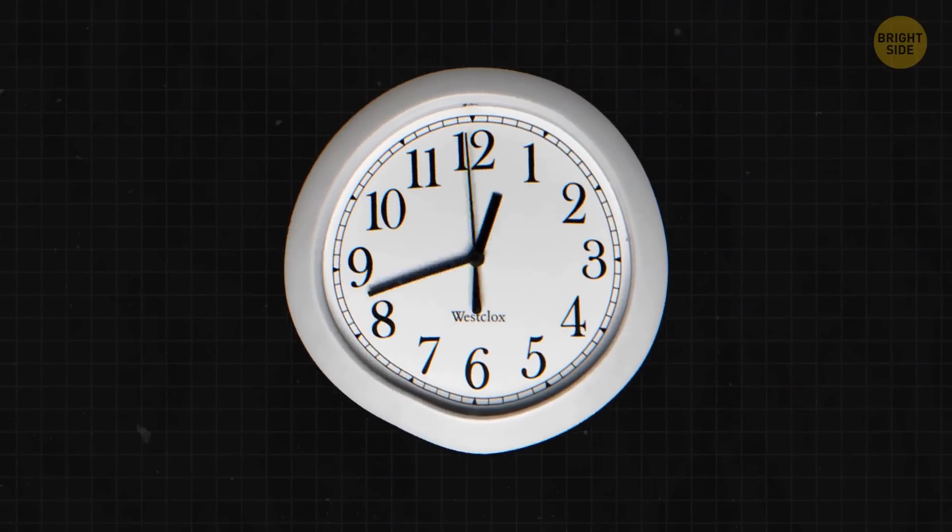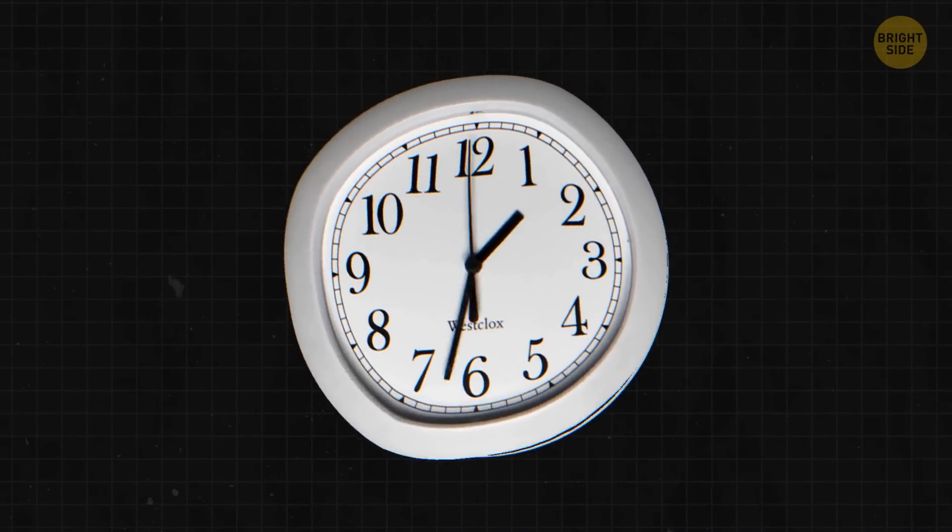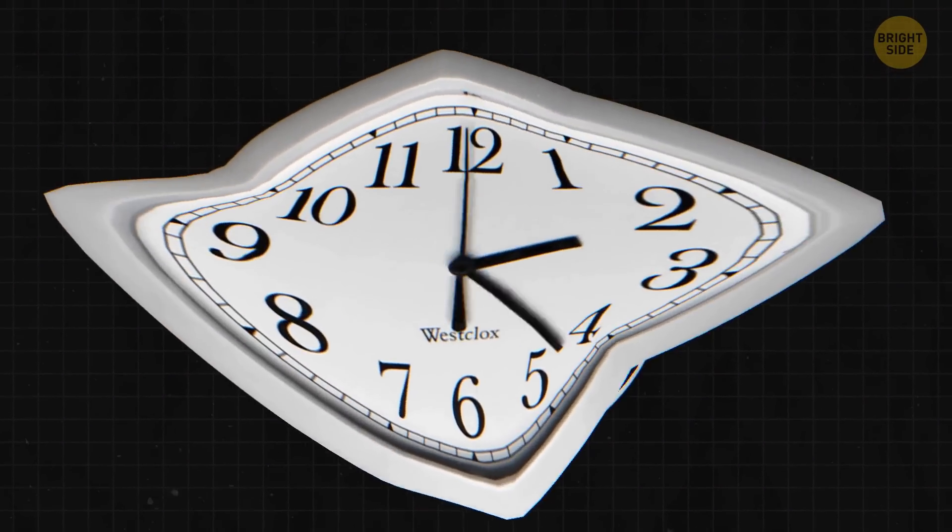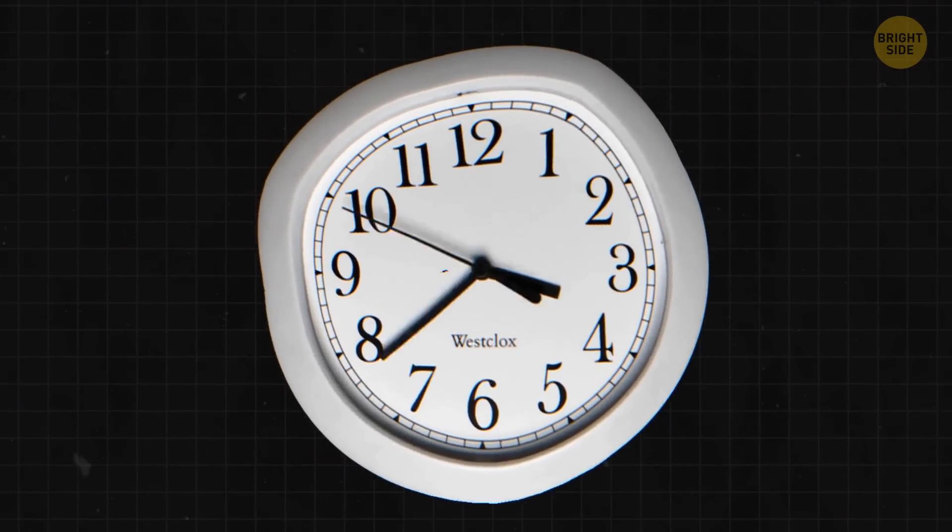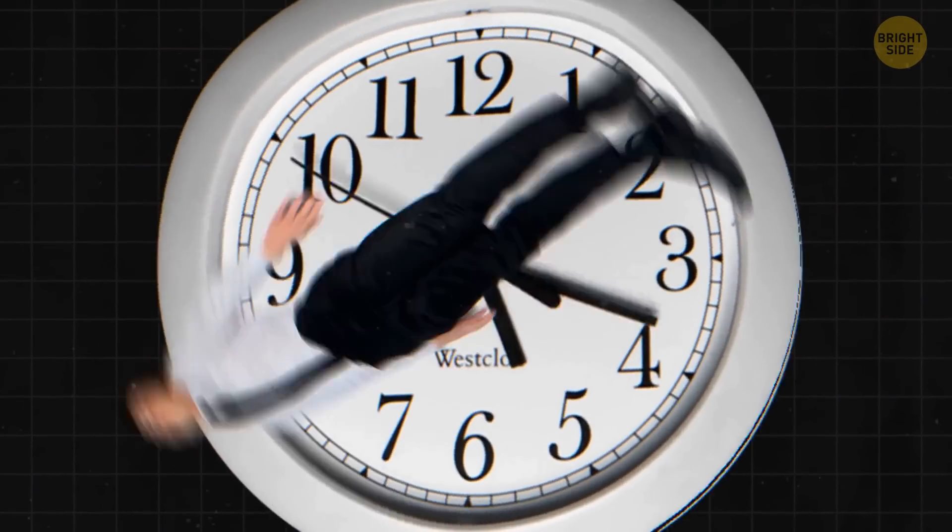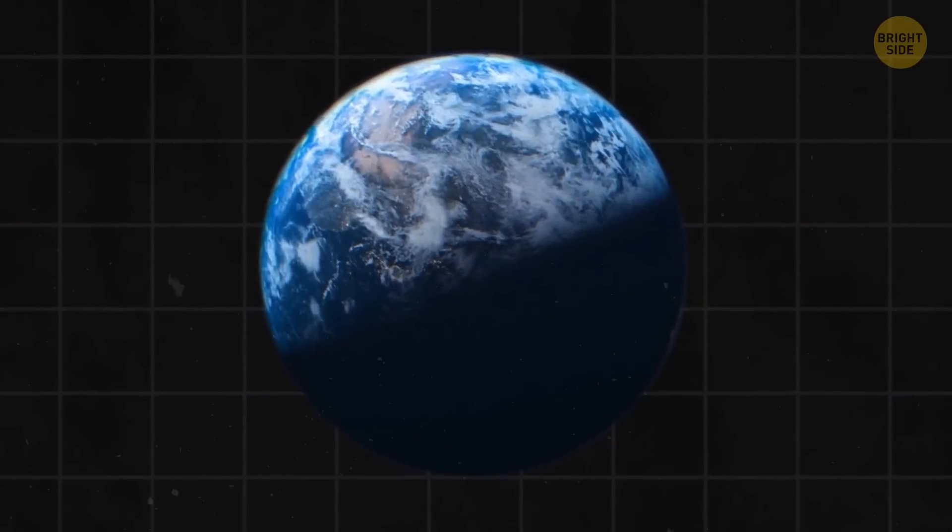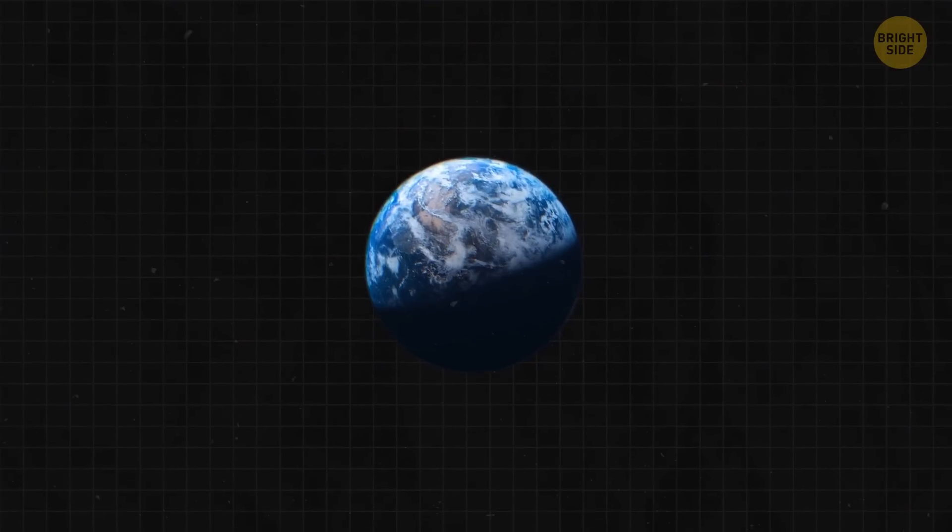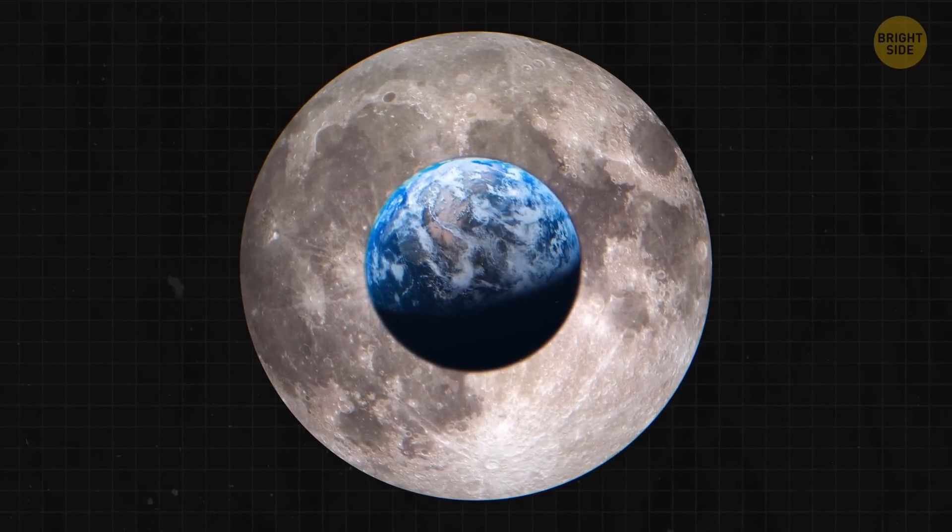Our day, the 24-hour cycle we live by, is slowly stretching out too. This sneaky gradual change will eventually lead to days that are 25 hours long. And here's why it's happening. Earth's rotation, that spinning we do each day, is getting a bit slower each year, and it's all thanks to the Moon.